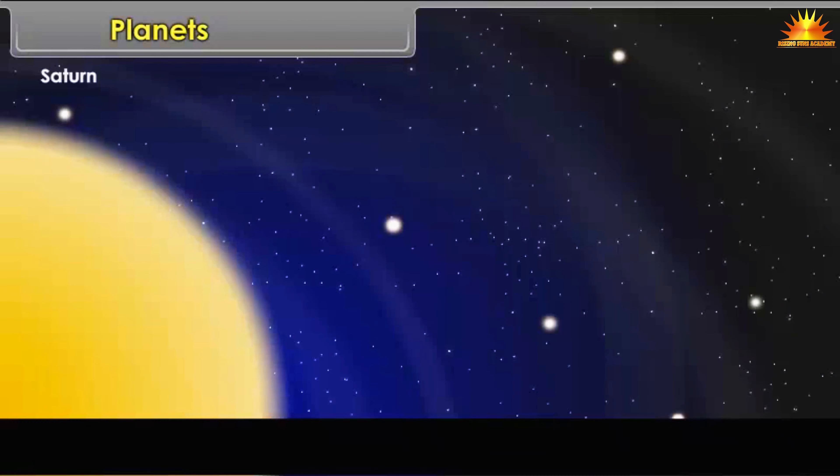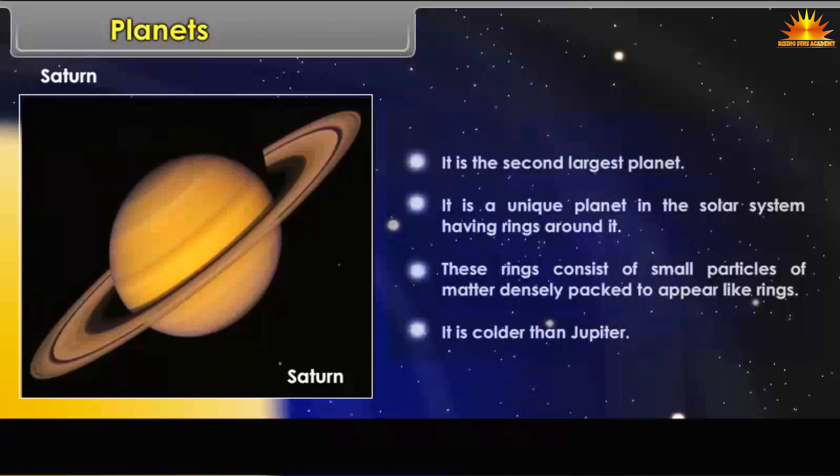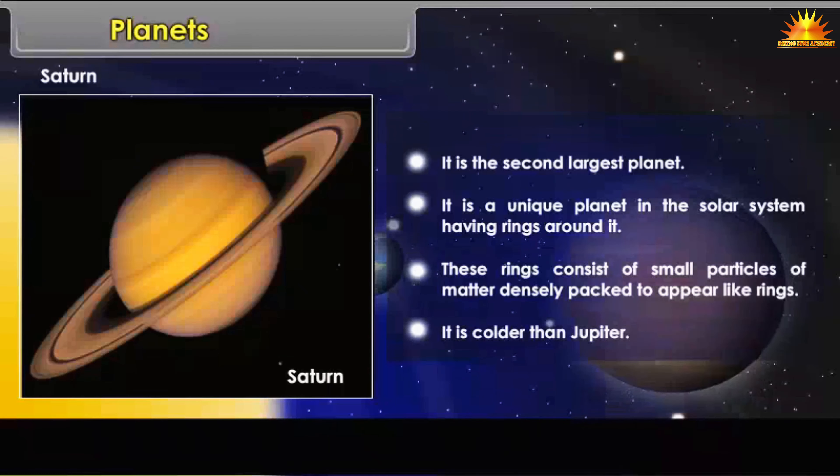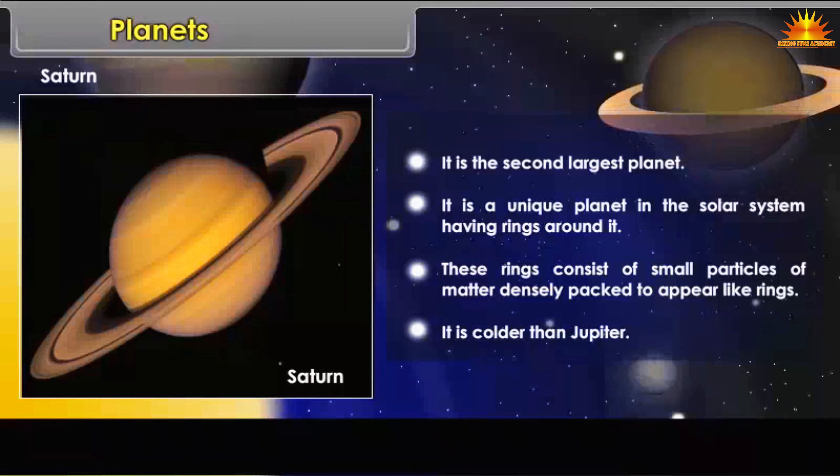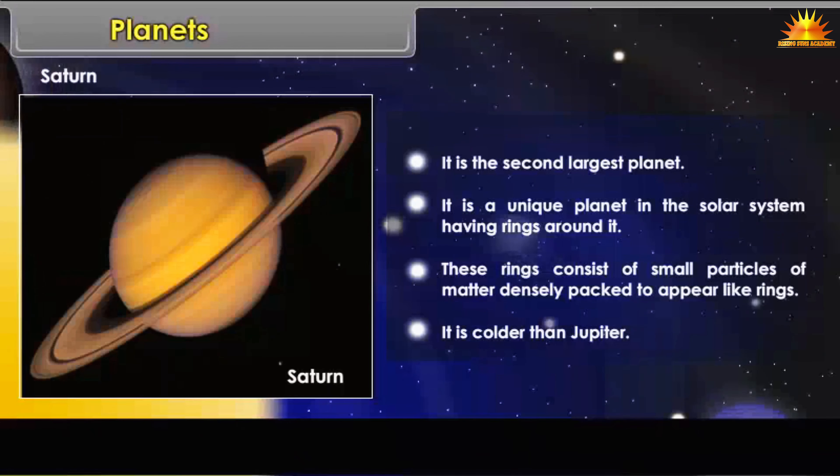Saturn: It is the second largest planet. It is a unique planet in the solar system having rings around it. These rings consist of small particles of matter densely packed to appear like rings. It is colder than Jupiter.